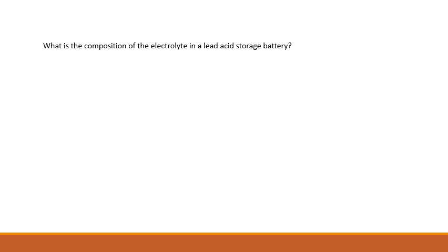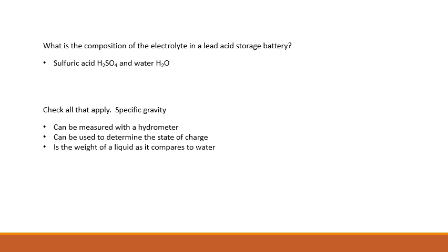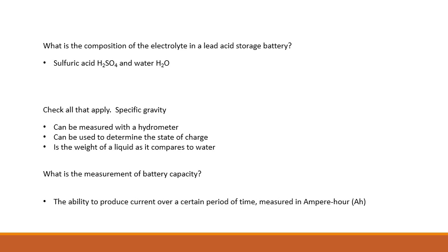What is the composition of the electrolyte in a lead acid storage battery? It is sulfuric acid (H2SO4) and water (H2O). Specific gravity can be measured with a hydrometer, can be used to determine the state of charge, and is the weight of a liquid as it compares to water — all of these apply. What is the measurement of battery capacity? It is the ability to produce current over a certain period of time, and its measurement is the ampere hour, or AH.